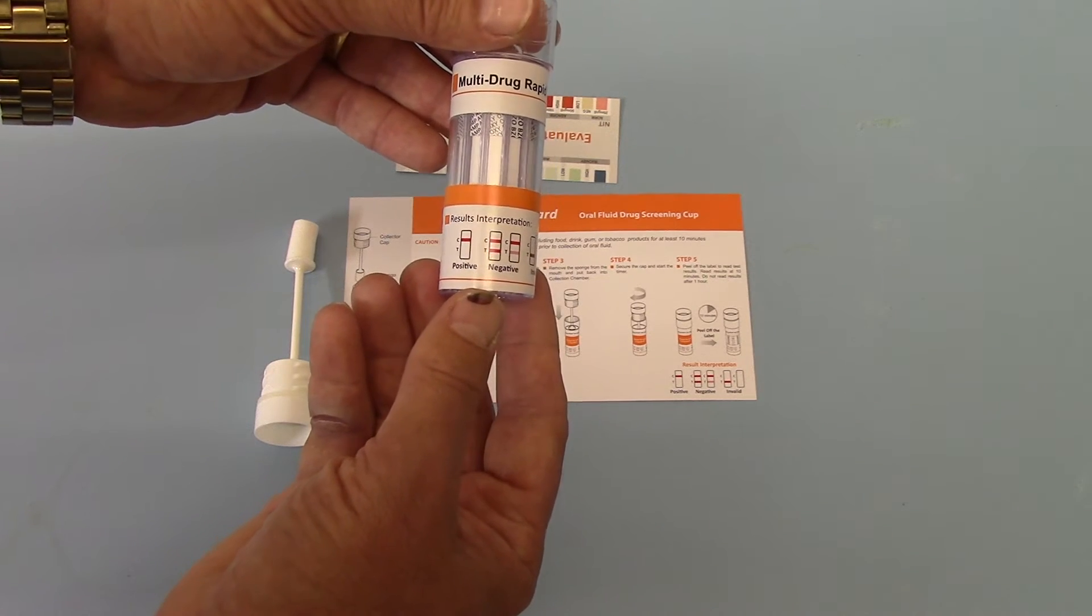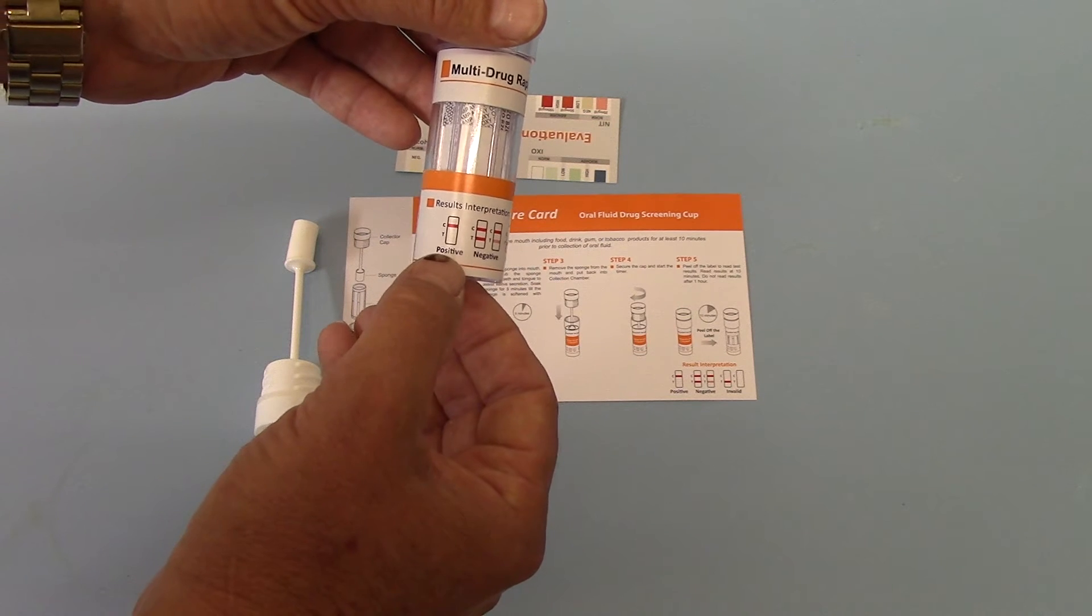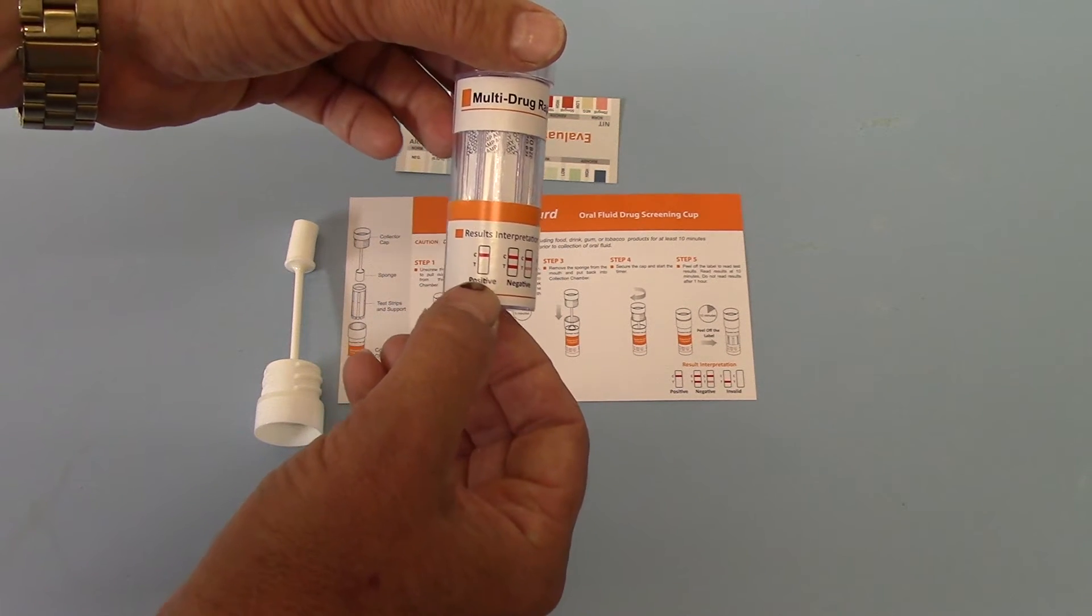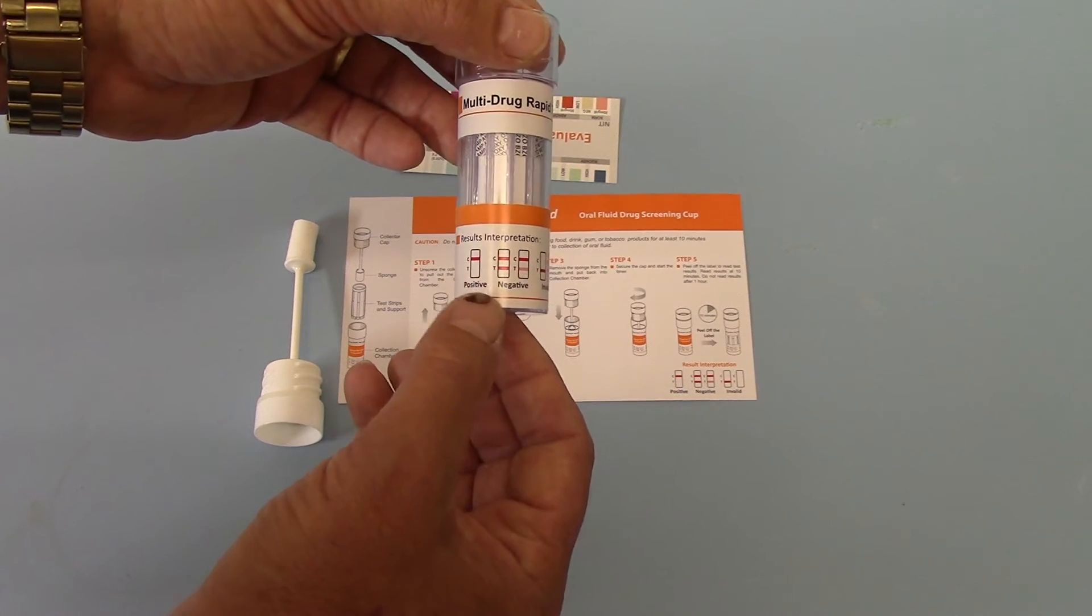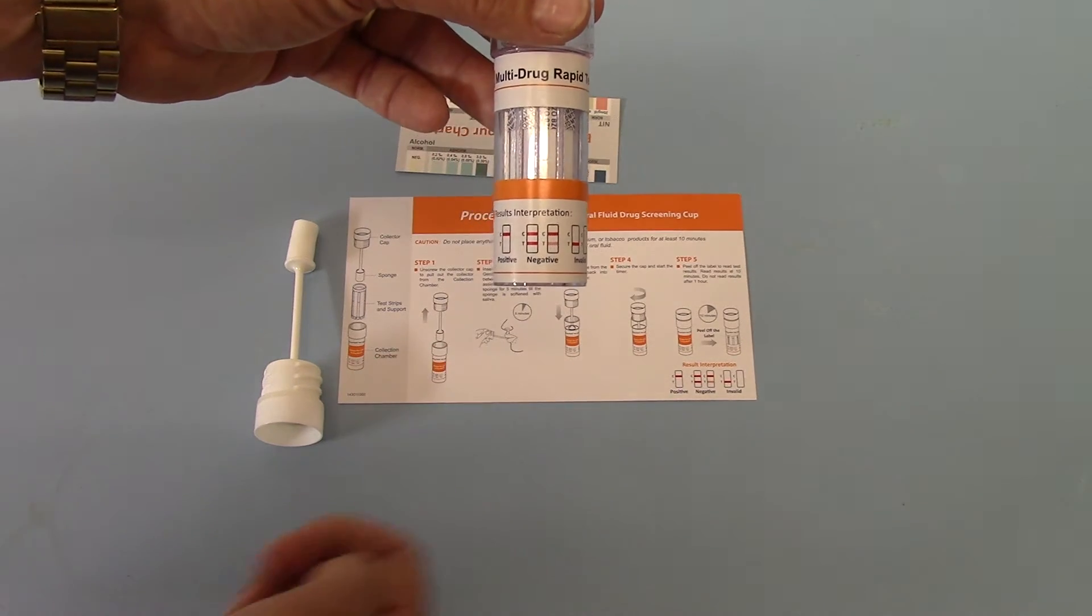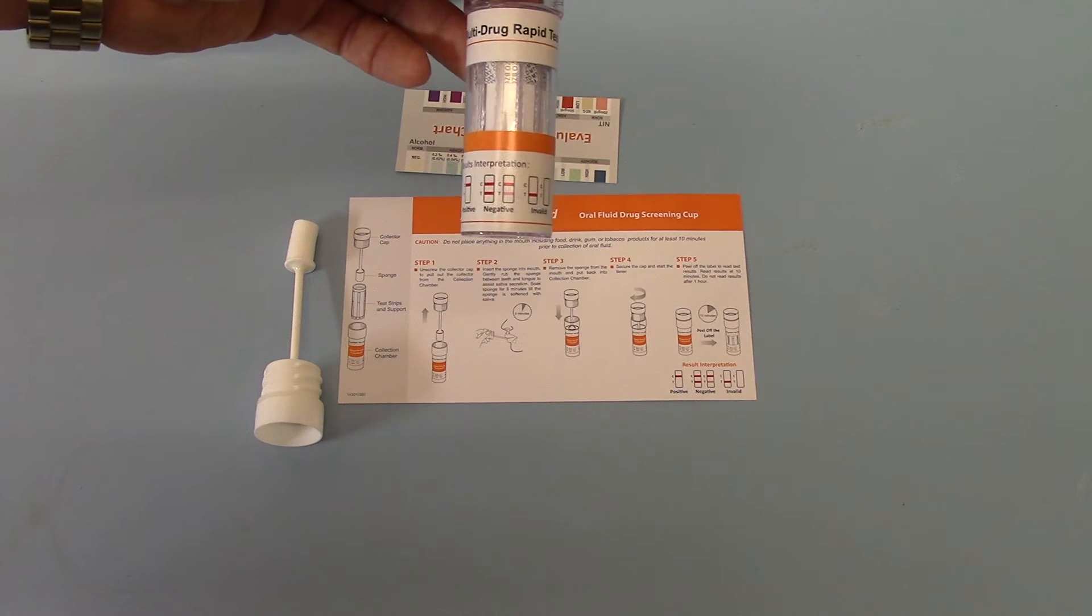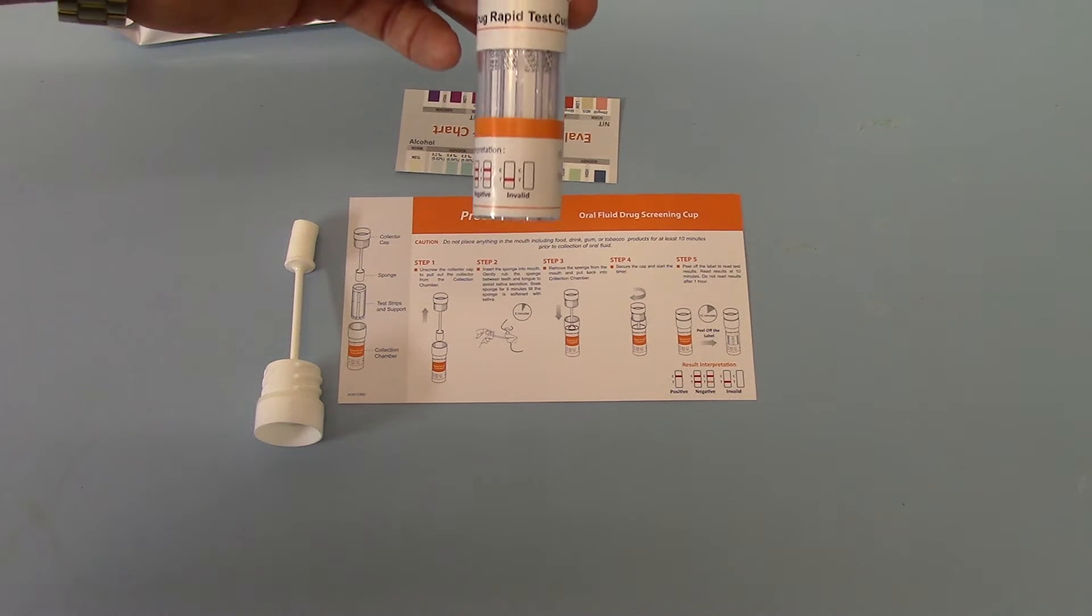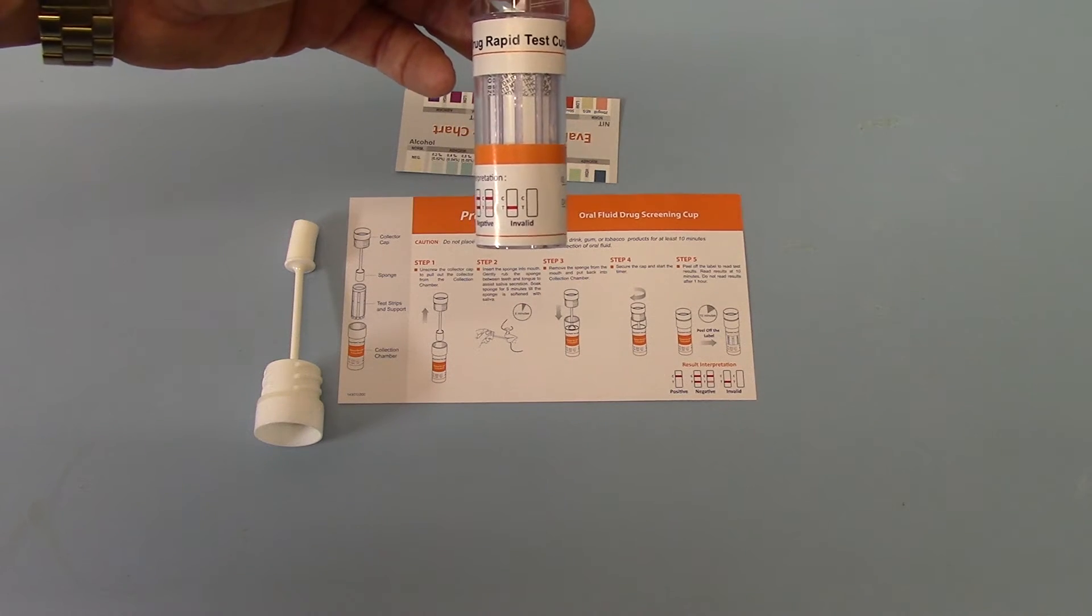On the side of the test barrel are result interpretation guidances, with a positive result being indicated by a control line but a completely absent test line at the read time, and then a negative result being indicated by the presence of a test line, whether it's thin, faint or very discreet. Invalid results would be where either no test lines or control lines show or no control line is shown.